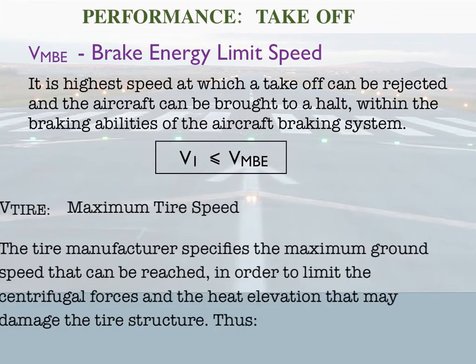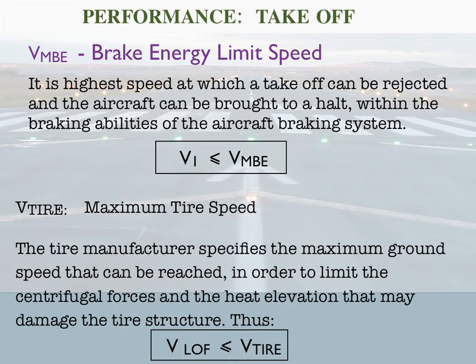Next is the tyre maximum tyre speed limit. The tyre manufacturer specifies the maximum ground speed that can be reached in order to limit the centrifugal forces and heat elevation that may damage the tyre. Thus V lift-off is always less than or equal to V tyre, for similar reasons as discussed for VMU.